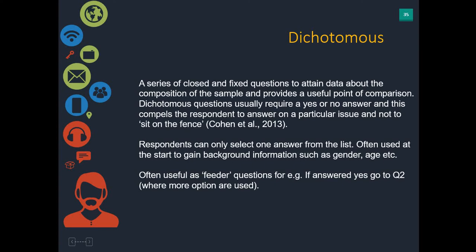Dichotomous questions are often used as a useful point of comparison, because they usually require a yes or no answer. This compels the respondent to answer on a particular issue and not sit on the fence. If you had a yes-no question, you can see how many people said yes and how many said no. For example, you've got gender data so you can run tests to see if there's a difference between males and females. Without a dichotomous question, you may not have that data.